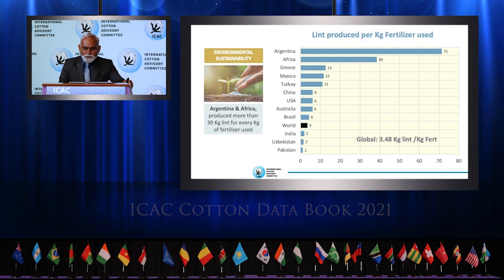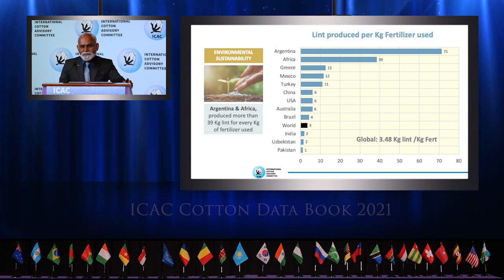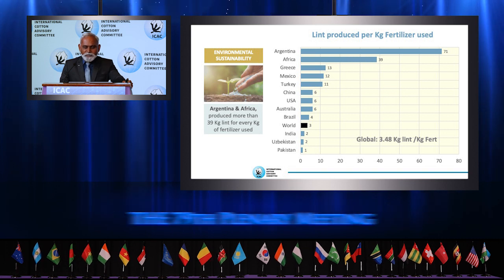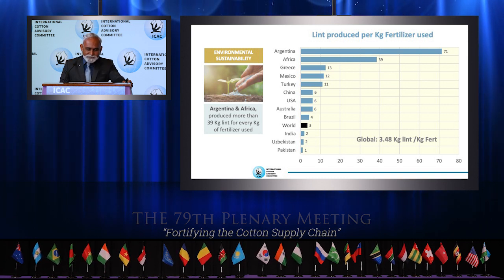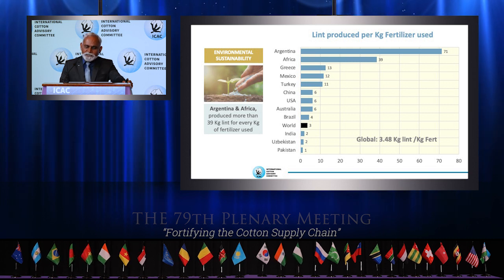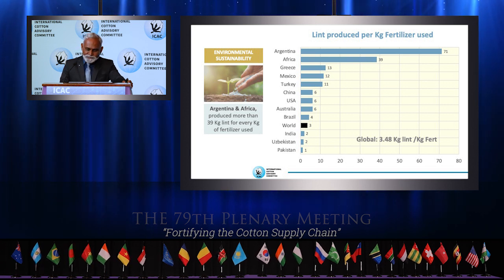We will now take a look at fertilizer use efficiency, which means the quantity of lint produced per kilogram of fertilizer used. As you can see here, Argentina and Africa produced more than 39 kilograms of lint per kilogram of fertilizer used, and thus have the highest fertilizer use efficiency. Data also indicates that there is an imminent need for Asian countries, such as India, Pakistan, and Uzbekistan, to focus on precision farming to increase fertilizer use efficiency.